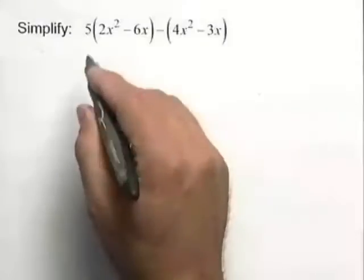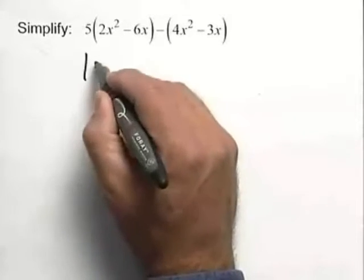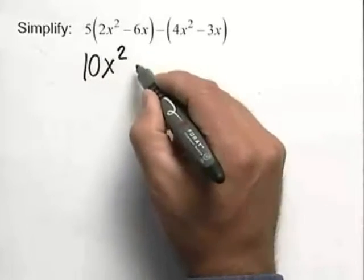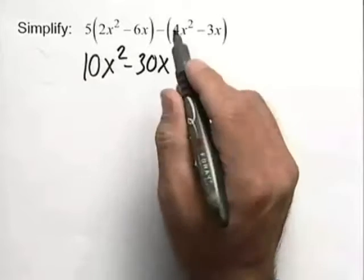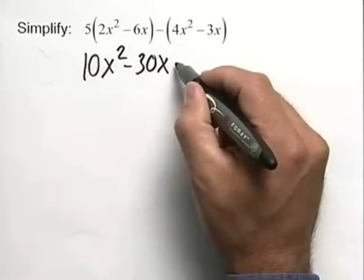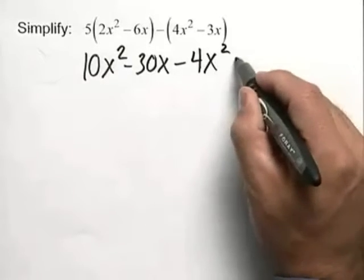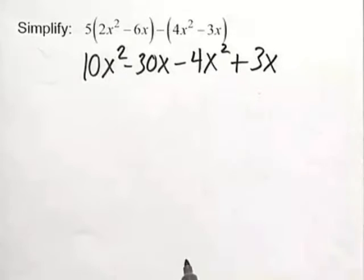This problem deals with simplifying an algebraic expression. First we'll remove the parentheses by using the distributive property to get 10x squared minus 30x. Make sure that you distribute the sign through completely to get a minus 4x squared plus 3x.